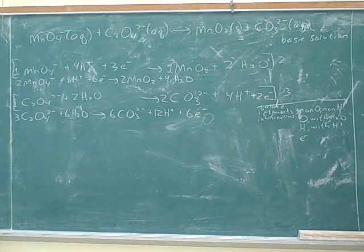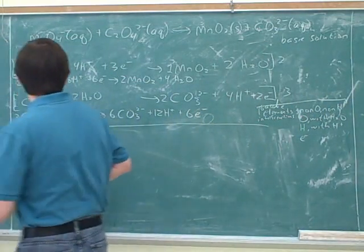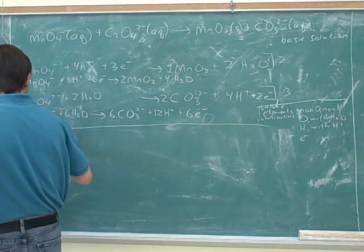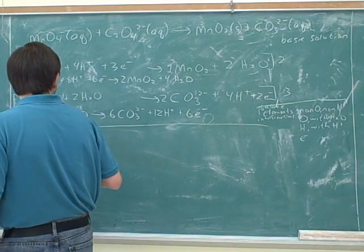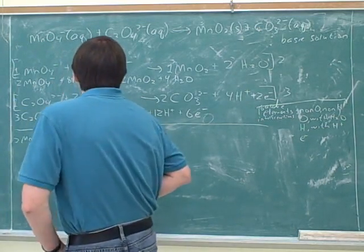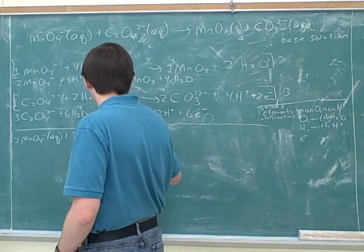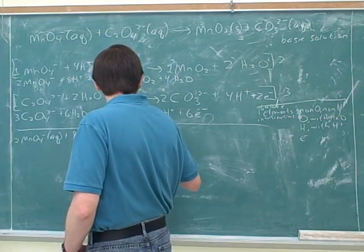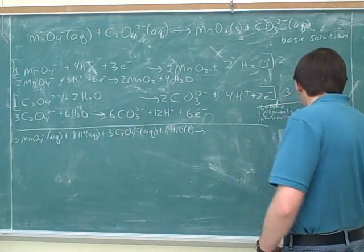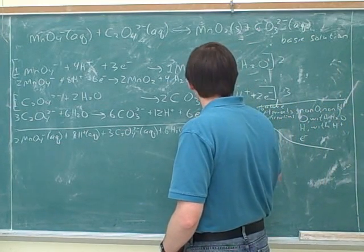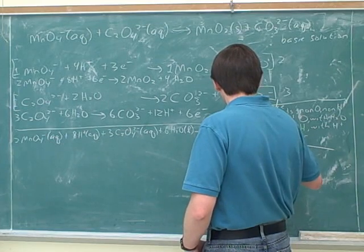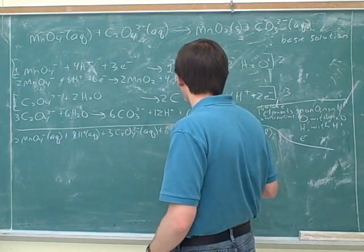Alright, now what we just add them. Okay, so what are going to be the starting materials for the overall reaction? It goes to 2MnO2 solid plus 4H2O and then plus 6H2O.